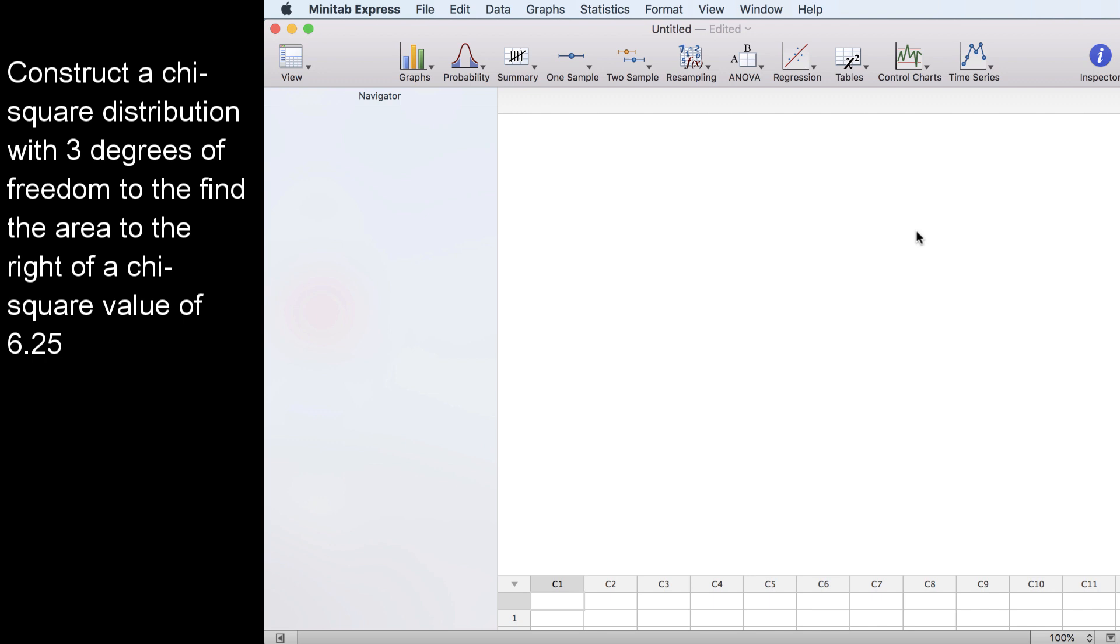In this example, we're going to construct a chi-square distribution with three degrees of freedom to find the area to the right of a chi-square value of 6.25.